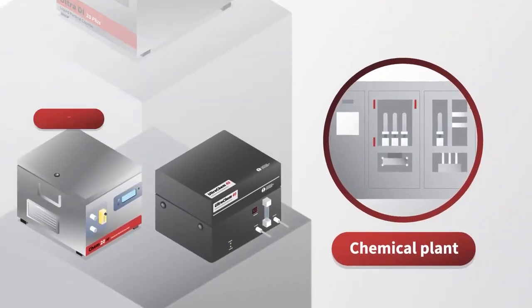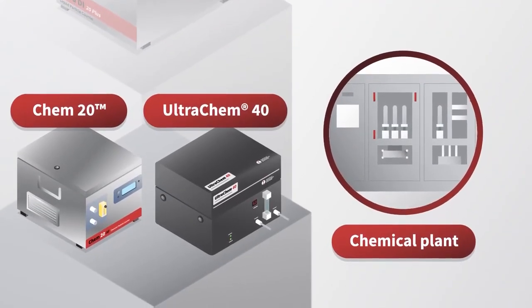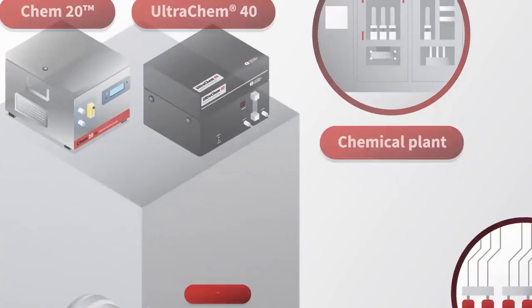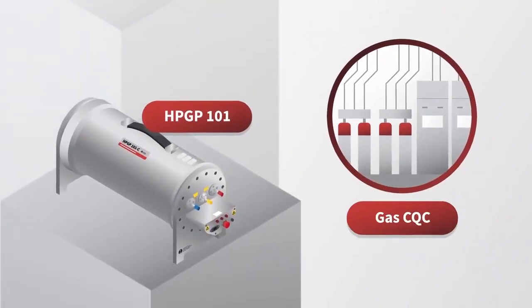Chemical plants rely on Chem 20 and Ultra Chem 40 for chemical purity, and HP GP 101 is used for bulk gas monitoring.